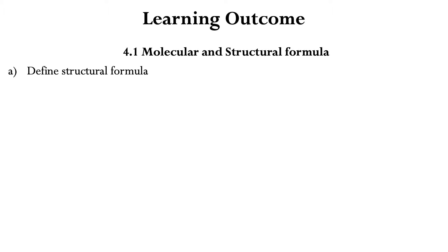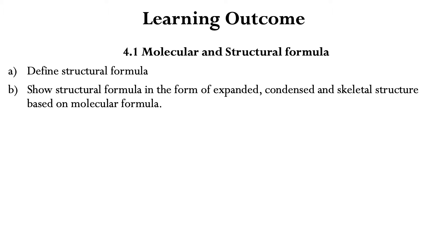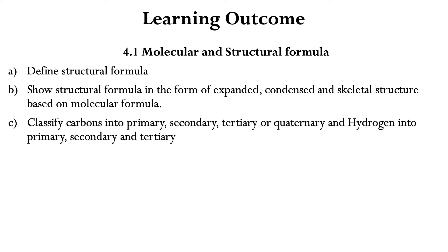The learning outcomes for subtopic 4.1, molecular and structural formula, are: (a) define structural formula; (b) show structural formula in the form of expanded, condensed, and skeletal structure based on molecular formula; and (c) classify carbons into primary, secondary, tertiary, or quaternary, and hydrogen into primary, secondary, and tertiary.